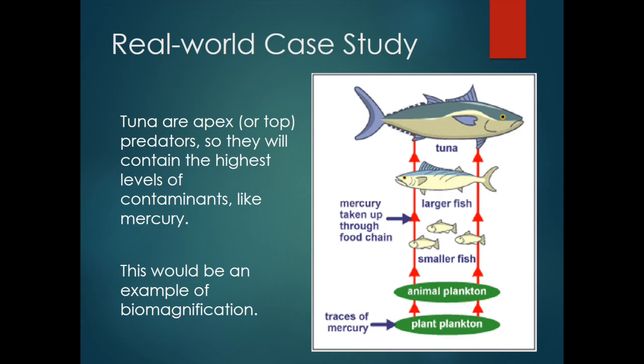Biomagnification isn't just a concept — it's a phenomenon researchers have observed across the globe. Plant plankton, or phytoplankton, have a small amount of mercury, but animal plankton, or zooplankton, have to eat several phytoplankton to survive, which increases the level of contamination. This pattern repeats at every level of the food web until tuna have the highest level of contamination when compared to other organisms in the food web.